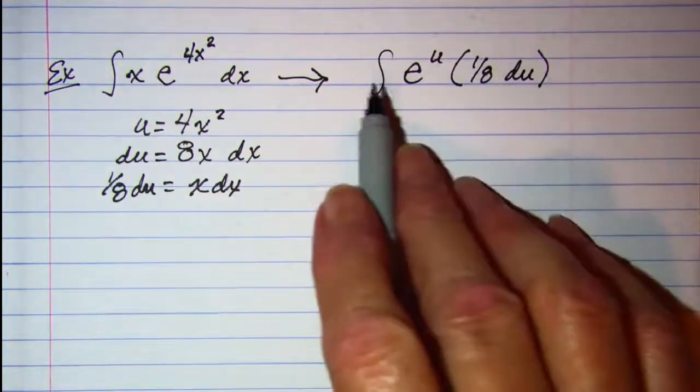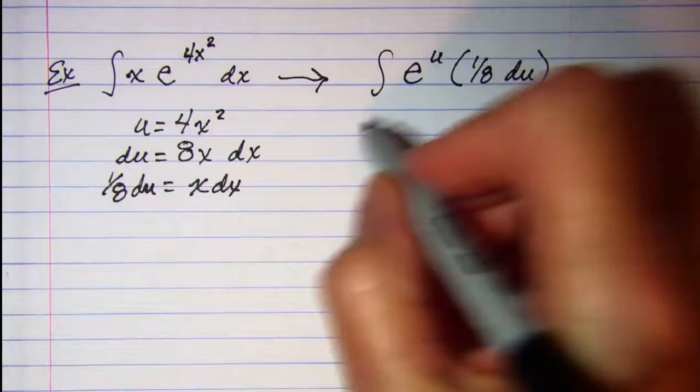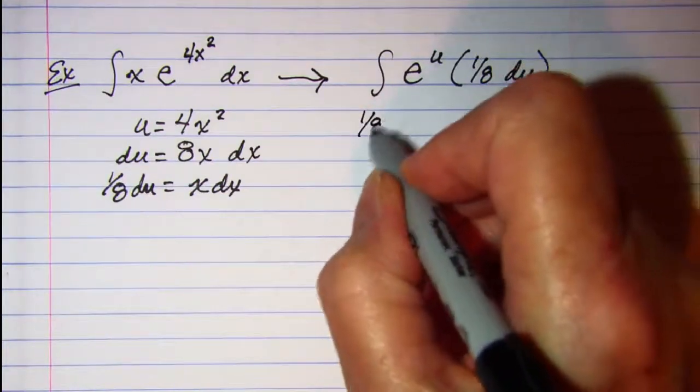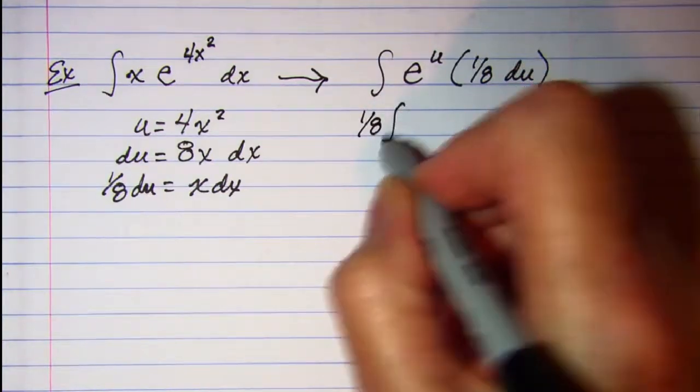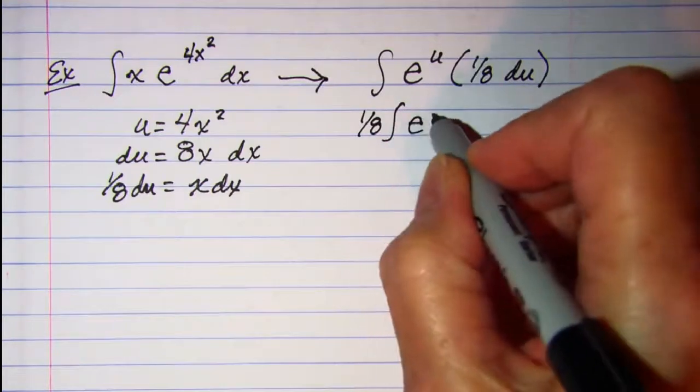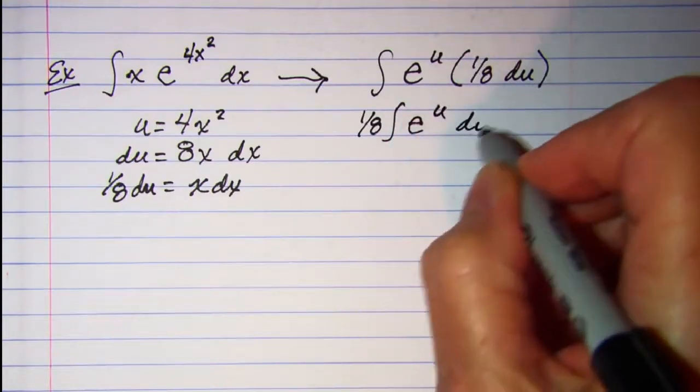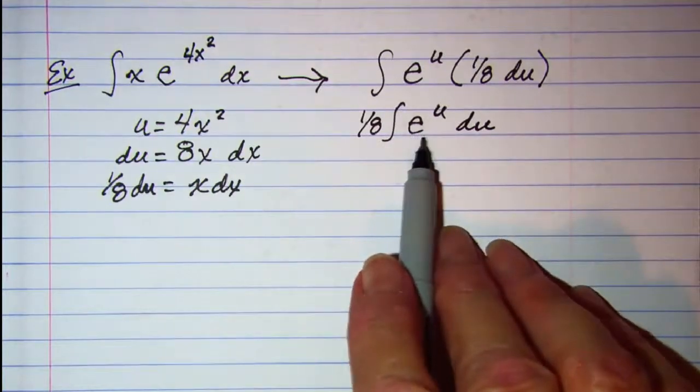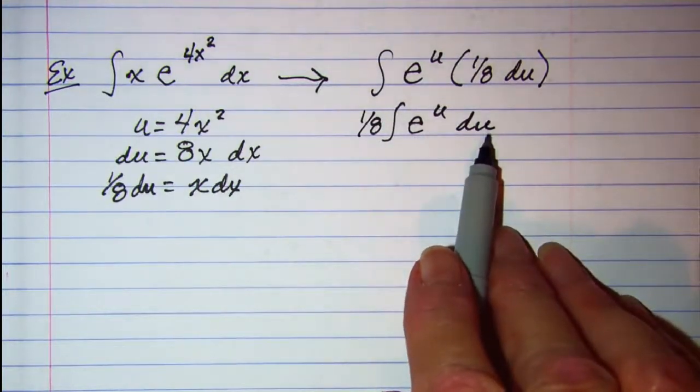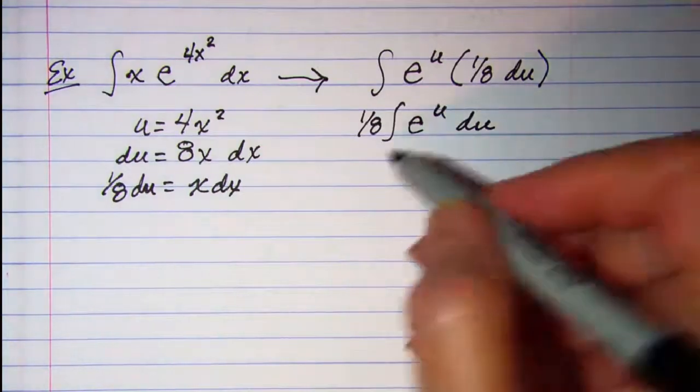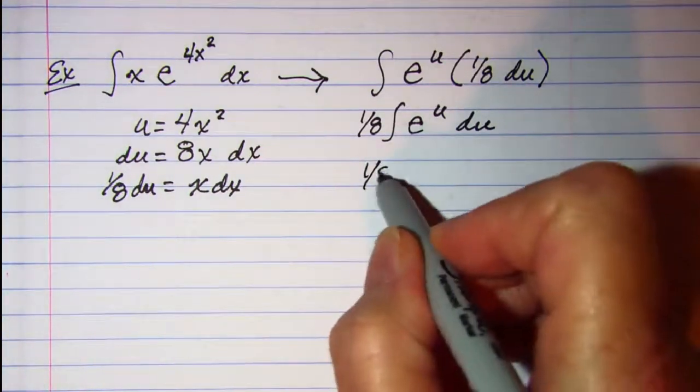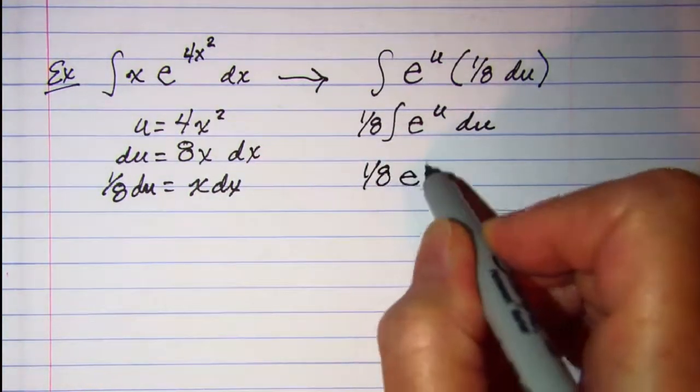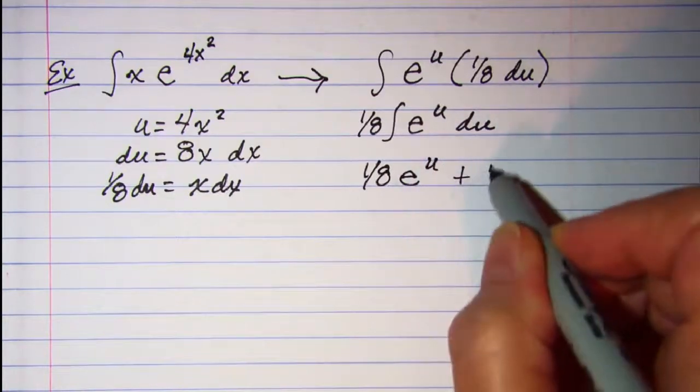The 1 eighth can be brought out in front of the integral. And then I know that the integral of e to the u du is e to the u plus a constant. So this is 1 eighth e to the u plus a constant.